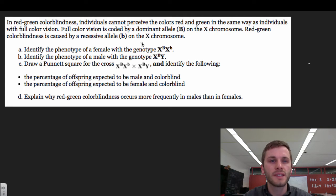So this is an example of a sex-linked trait. So we're going to go in and see how we can solve this problem. First part, it says identify the phenotype of a female with the genotype X with the B, big B here, and X with little b. So phenotype is your physical characteristic, and the genotype is the genetic makeup.